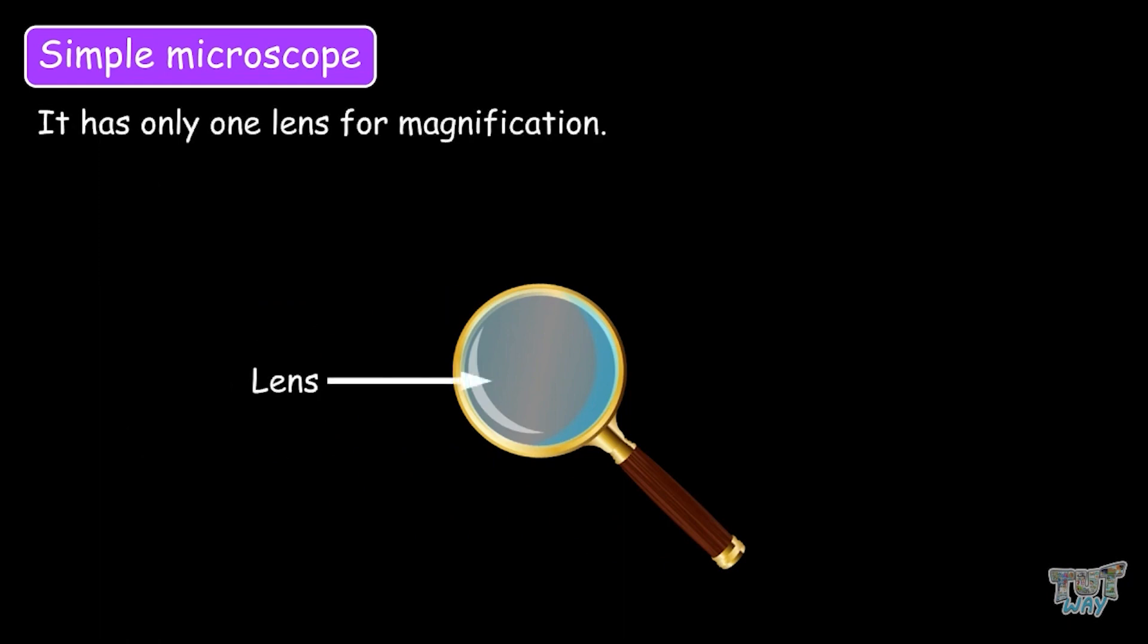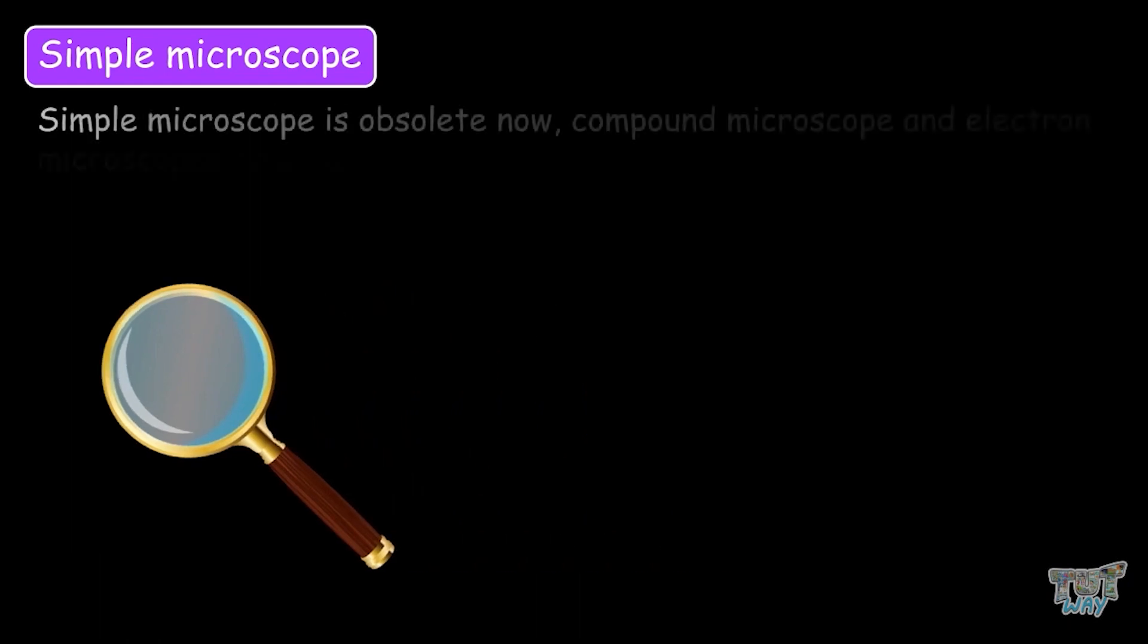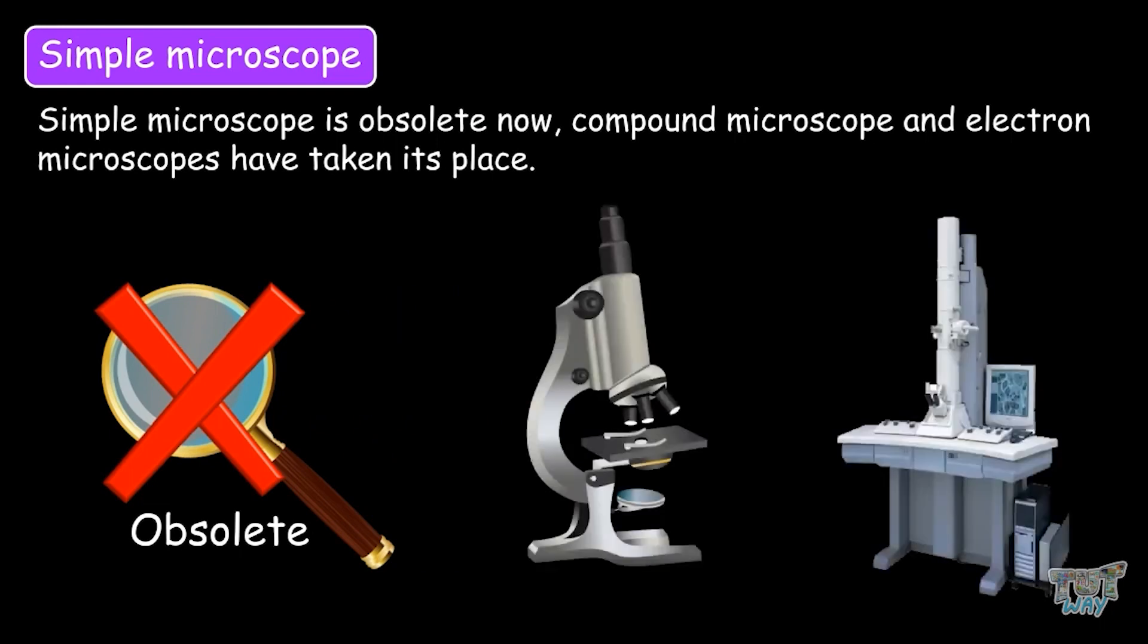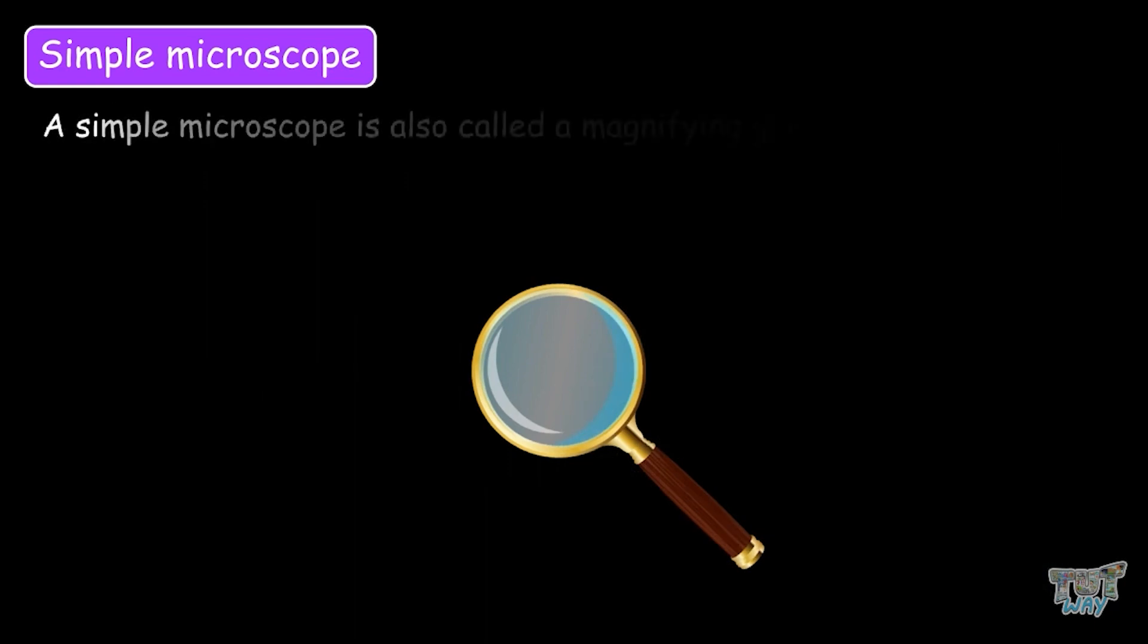It only has one lens for magnification. The simple microscope is obsolete now. The compound microscope and electron microscopes have taken its place. A simple microscope is called a magnifying glass.